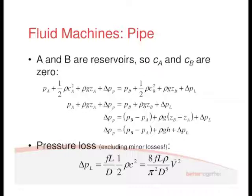And so the pressure loss, this is excluding minor losses, is obviously going to be this term, which we covered before. And again, replacing C with V dot over A, we end up with this form: 8 FL rho upon pi squared D to the 5 times by V dot squared.